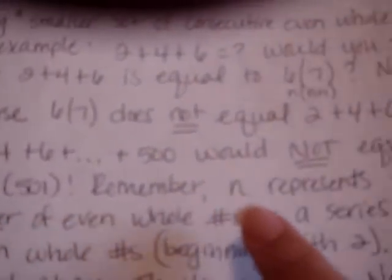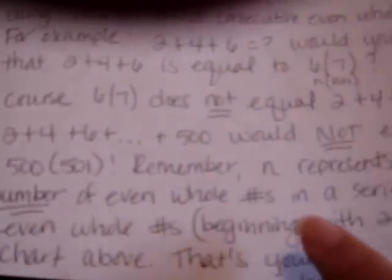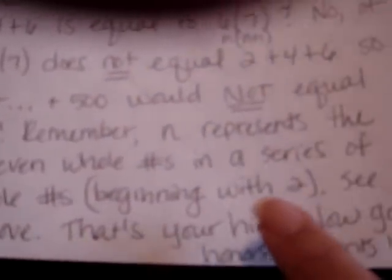So, this problem right here would not equal 500 times 501, like some of you guys wanted to say. Remember, n represents the number of even whole numbers in a series of even whole numbers. Of course, your series begins with the number 2. Because remember back from the chart, n, this top row here, n, represents the number of even whole numbers, starting with the number 2. And then you keep adding the next even whole number.